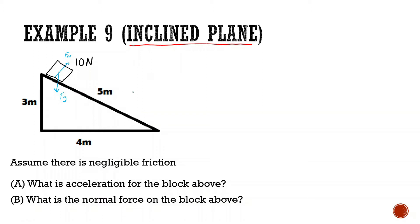What I like to do whenever we have inclined plane problems is to actually rotate this inclined plane so it looks like it's on a flat surface. I'm going to put this on a flat surface like this. Then force normal is going to look something like this, and force of gravity, which is coming from the middle, since it's rotated, is going to look something like this. I know it's a little bit strange, but this makes it more obvious where everything is.